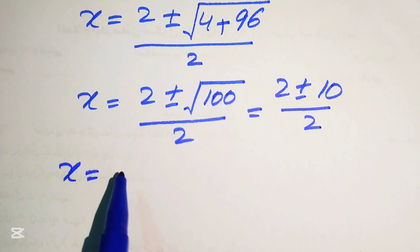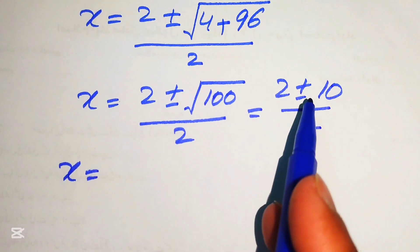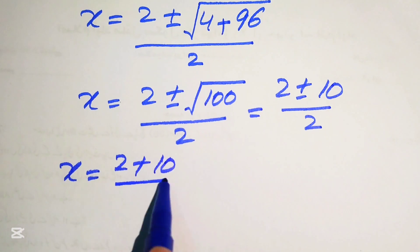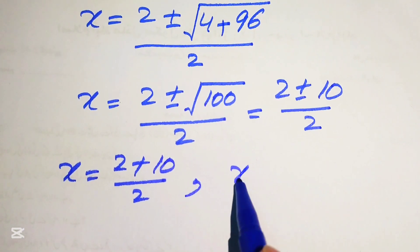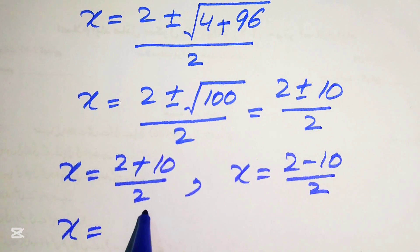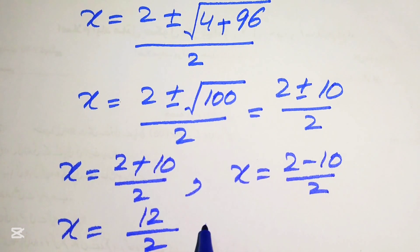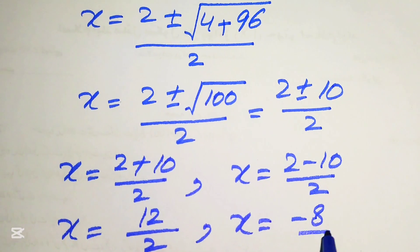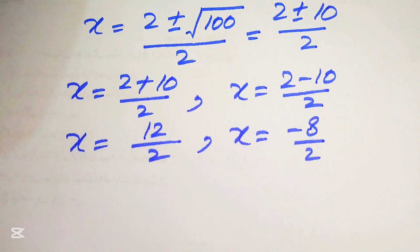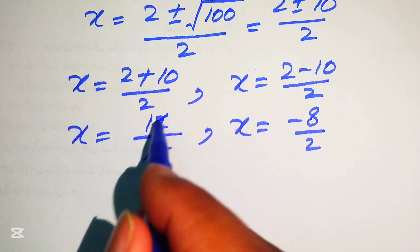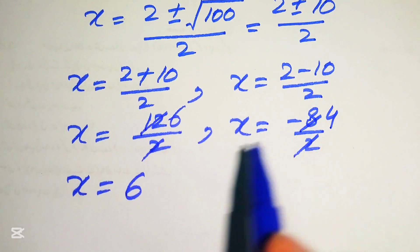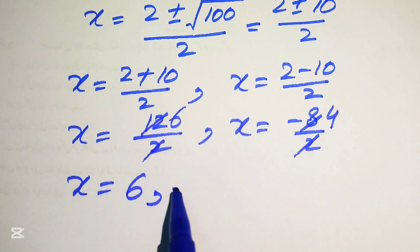Writing out the two cases: taking the positive value gives x equals (2 plus 10) over 2 equals 12 over 2 equals 6. Taking the negative value gives x equals (2 minus 10) over 2 equals minus 8 over 2 equals minus 4. So the two real roots from Case 1 are x equals 6 and x equals minus 4.